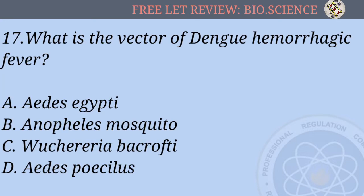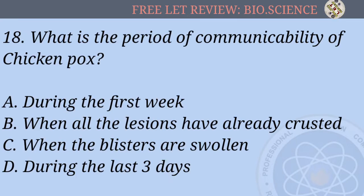Question 17: What is the vector of dengue hemorrhagic fever? A) Aedes aegypti, B) Anopheles mosquito, C) Wuchereria bancrofti, D) Aedes poicilus. Question 18: What is the period of communicability of chicken pox? A) During the first week, B) When all the lesions have already crusted, C) When the blisters are swollen, D) During the last three days.